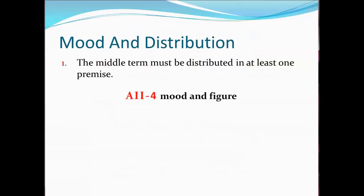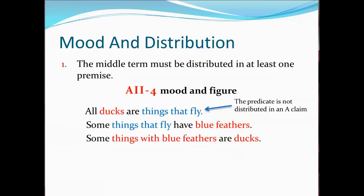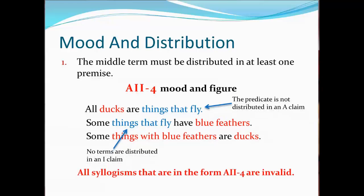Now let's apply the rules. The first rule is: the middle term must be distributed in at least one premise. Suppose we have an AII-4 syllogism. In the fourth figure, the middle term is in the predicate position in the major premise, and the subject position in the minor premise. The rule says the middle term must be distributed in at least one premise. It isn't distributed in the major premise because only terms in the subject position of the A claim are distributed. It isn't in the minor premise because neither term is distributed in an I claim. This violates the rule, so the syllogism is invalid. Any syllogism in the form AII-4 will be invalid no matter what terms are used — validity is determined by form.